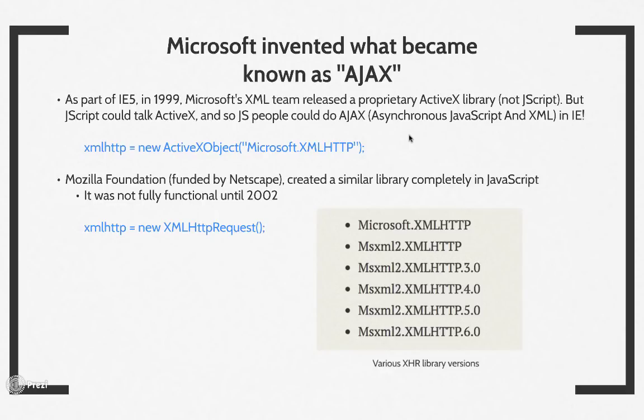They implemented this in a proprietary technology called ActiveX. JScript — their version of JavaScript — had additional features that could talk to ActiveX, so if you were building for Internet Explorer, you could do AJAX back in 1999. This meant Netscape had to catch up. So Netscape funded the Mozilla Foundation, which reverse-engineered the ActiveX library and created a JavaScript object called XMLHttpRequest that could do the exact same thing as Microsoft's proprietary library.